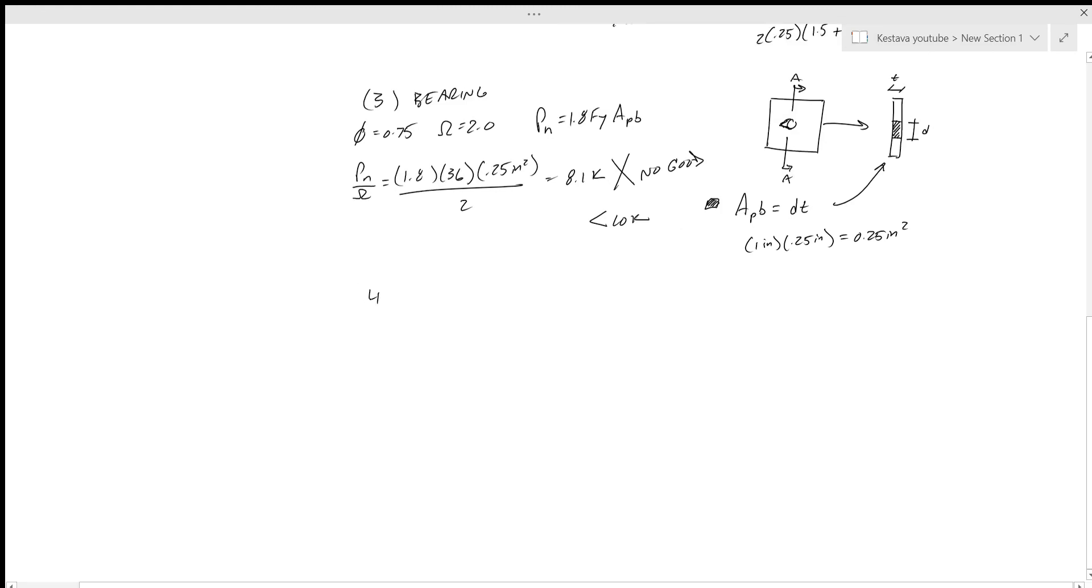All right, let's check the last one. The last condition is tension gross, and that is going to be phi_t equals 0.9 and omega equals 1.67. And this is denoted in chapter D as well, section 2, under equation D2-1, which is P_n equals F_y A_g. And what's happening in this mode failure is you have this bolt, you have this force, and actually the plate itself is either ripping itself apart in tension, either right here or right here through its gross section, so where there's no section loss in the steel, which is very unlikely, but we still want to check it anyway.